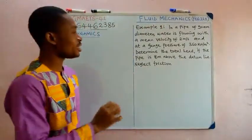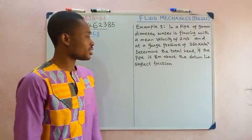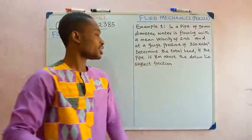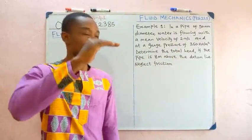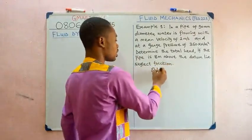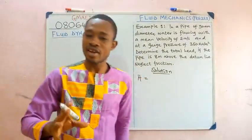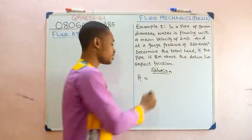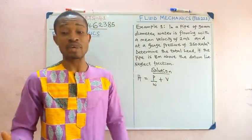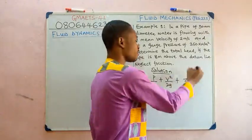We have this example: in a pipe of 90 mm diameter, water is flowing with a mean velocity of 2 m/s and at a gauge pressure of 350 kN/m². Determine the total head if the pipe is 8 metres above the datum line. The total head H = P/W + V²/2g + Z.